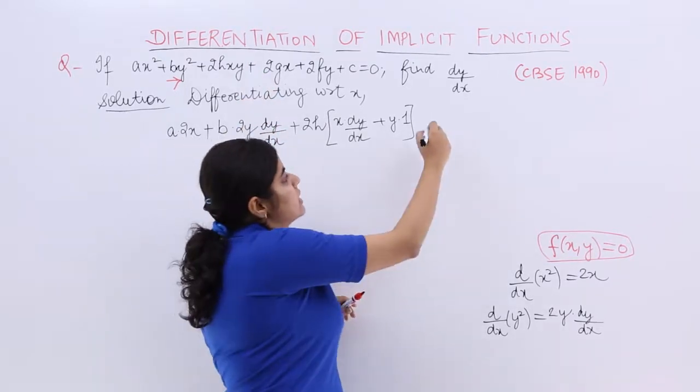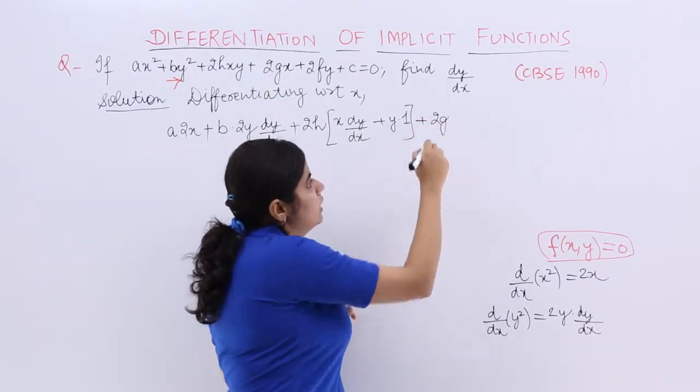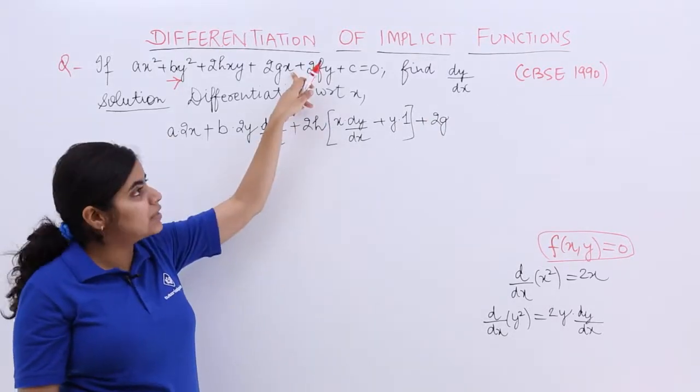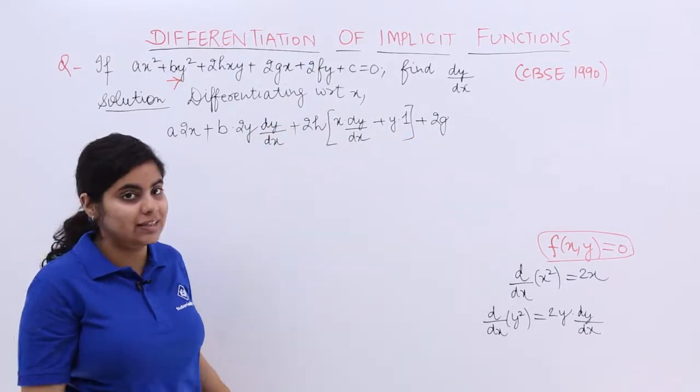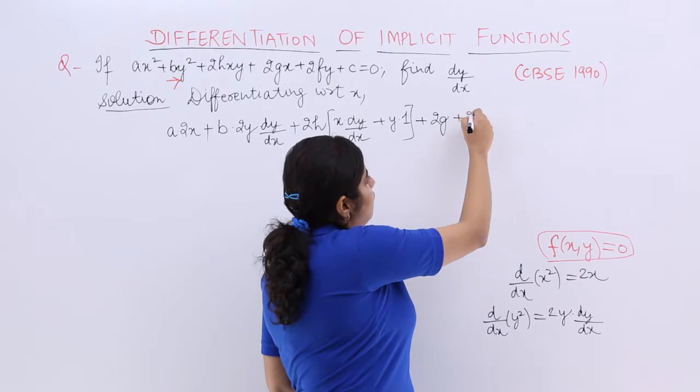Next is + 2gx. So it is + 2g. Differentiation of x with respect to x is 1, so we are not writing it.